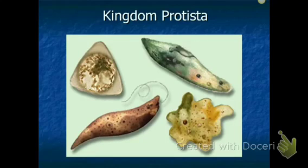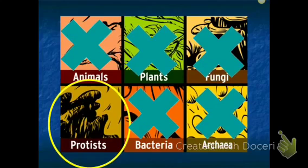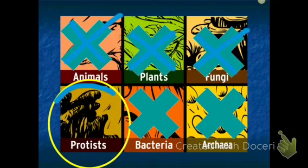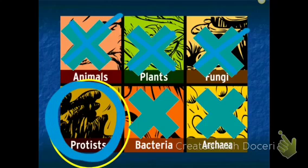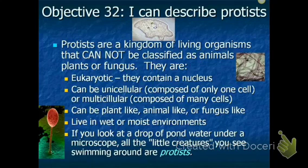This week we are going to start talking about our cell unit, and we're going to start with some special cells called protists. Protists are their own special kingdom — they do not fit into the animal kingdom, the plant kingdom, or the fungus kingdom. Next, you'll learn about bacteria and archaea, which also have their own special kingdoms.